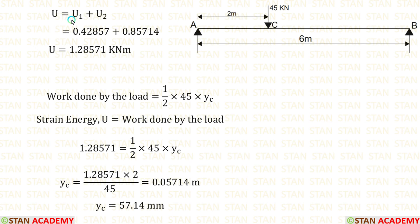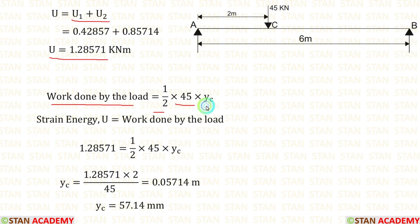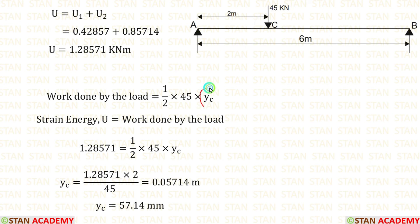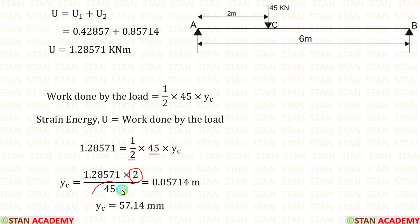Now the total strain energy is U = U1 + U2 = 1.28571 kNm. Work done by the load equals (1/2) × 45 × Yc, where 45 kN is the load at point C and Yc is the deflection. Equating strain energy and work done, we get Yc = 0.05714 m, which equals 57.14 mm.